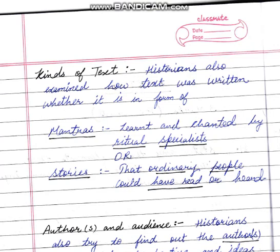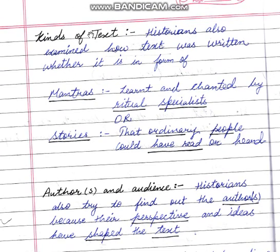The second sub-point is 'Kinds of Text.' Under this, write: 'Mantras for ritual specialists, and stories for ordinary people.' The Mahabharata has two kinds of text that historians analyze — whether it was written in mantras or in stories.